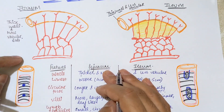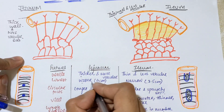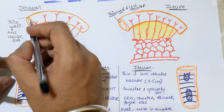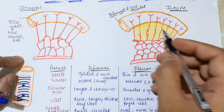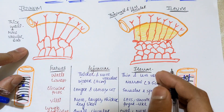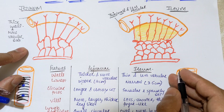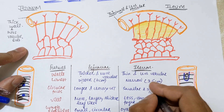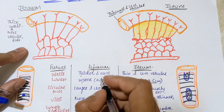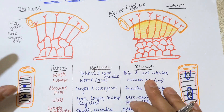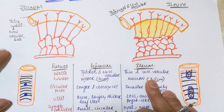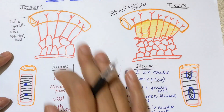Now the second difference: the lumen. In the case of jisnam we have a wider lumen, and in the case of helium we have a narrower lumen compared to jisnam. The diameter is around 3.5 cm in the case of helium and 4 cm in the case of jisnam.